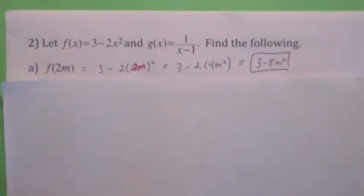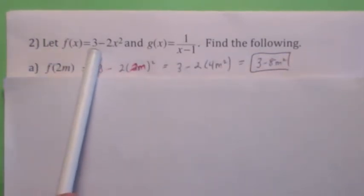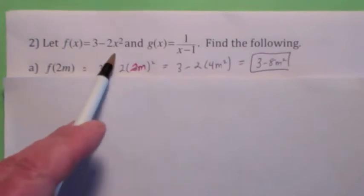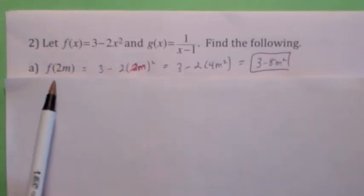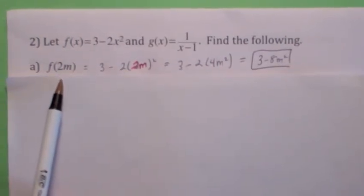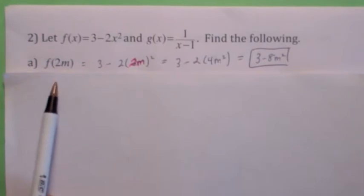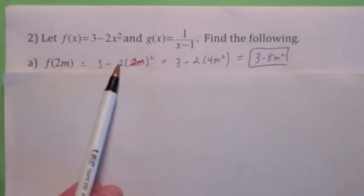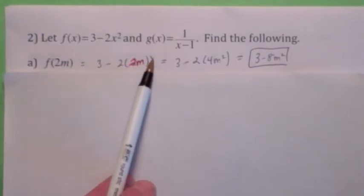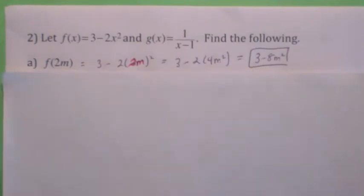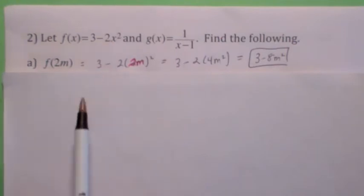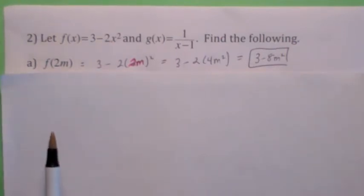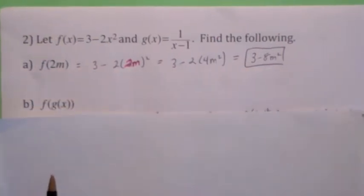Start off like this. Here are your two functions: f of x is 3 minus 2x squared, and g of x is 1 over x minus 1. What is f of 2m? f of 2m becomes 3 minus 2 times the quantity 2m squared, which simplifies to 3 minus 8m squared. You could find f of anything — f of anything is 3 minus 2 times the anything squared. You could even find f of g of x.